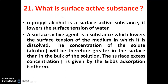What is a surface active substance? For example, N-propyl alcohol is a surface active substance — it lowers the surface tension of water. A surface active agent is a substance which lowers the surface tension of the medium in which it is dissolved.